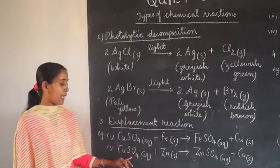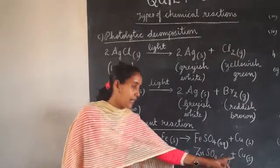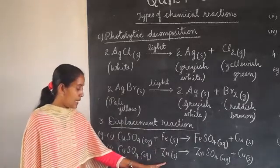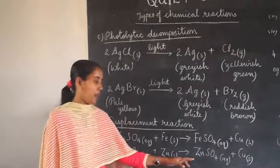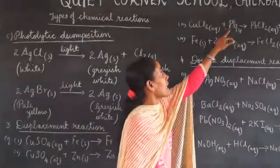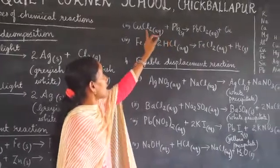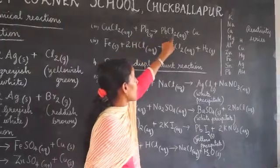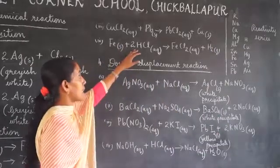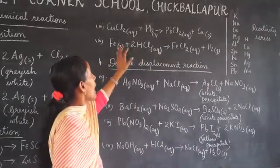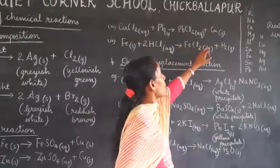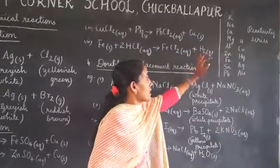The second example: copper sulphate plus zinc gives zinc sulphate plus copper. Here, zinc is more reactive than copper, so zinc displaces copper from copper sulphate to form zinc sulphate plus copper. Similarly, copper chloride plus lead: lead is more reactive than copper, so lead displaces copper from copper chloride to form lead chloride plus copper in the solid state. Also, iron reacts with hydrochloric acid: iron is more reactive than hydrogen, so iron displaces hydrogen, forming iron chloride plus hydrogen gas.